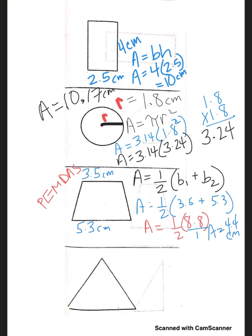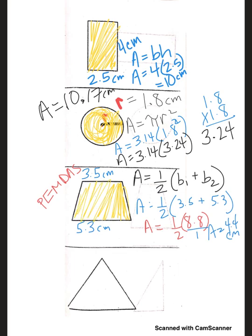Area equals 4.4 centimeters — and I'm going to be a stickler on units; I want to see units all the time. Let's backtrack: one-half times base 1 plus base 2; it doesn't matter which is base 1 or base 2. Add them, evaluate the parentheses first, then multiply by one-half or divide by 2. The area was 4.4 centimeters. Area is the amount of space that something covers.